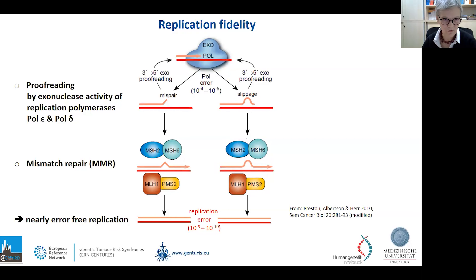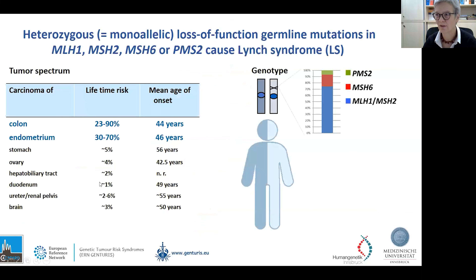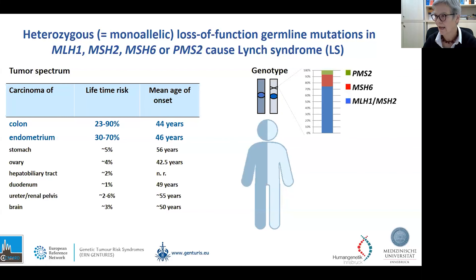The four mismatch repair genes work as tumor suppressors — for instance, like the NF1 or the BRCA1 gene. Individuals who have inherited a heterozygous loss-of-function germline mutation in one of these genes have a cancer predisposition syndrome called Lynch syndrome. Most patients with Lynch syndrome have a heterozygous mutation in the more penetrant MLH1 or MSH2 genes. Fewer Lynch syndrome patients have MSH6 and PMS2 mutations, but this is due to ascertainment bias because those genes are more penetrant and confer a higher tumor risk.